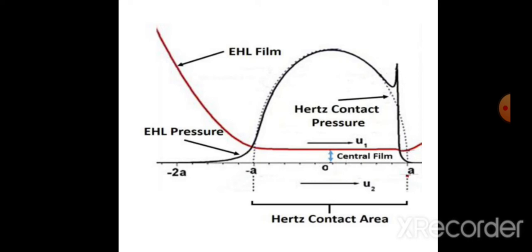Now let's look at this diagram. When two bodies are in contact, a Hertz contact pressure is created at the contact area. In the area near the contact — the post-contact area — the pressure will be more. The film thickness is shown here with the red lines representing the EHL film.